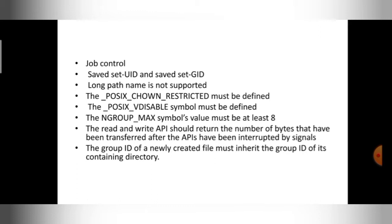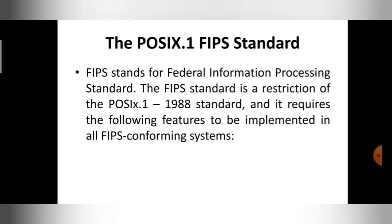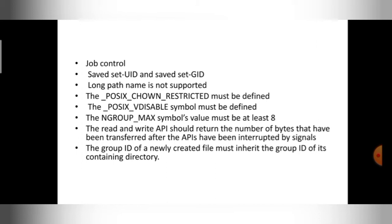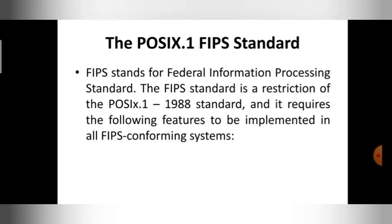Next, the save or set user ID and save or set GID options should be available if you are using a FIPS standard for your Unix programming. Save or set user ID means there should be an option to create user IDs for different users, and save or set GID means there should be an option to create different groups for different users. This feature is a must.